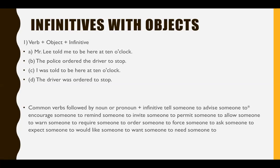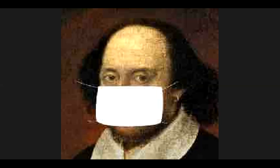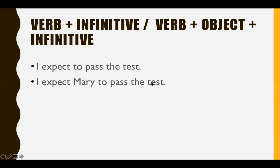There are also other structures for infinitives — infinitives with objects. For example: 'Mr. Lee told me to be here.' 'The police ordered the driver to stop.' Note: you don't say 'Mr. Lee said me' — you say 'told me to be there' or 'I was told to be there,' 'the driver was ordered to stop.' There's a list of verbs followed by object plus infinitive, such as 'I expect Mary to pass the test.'